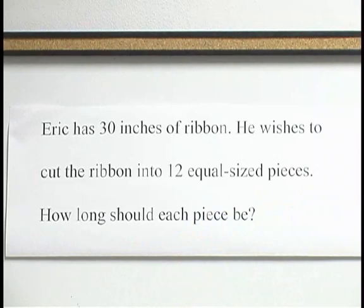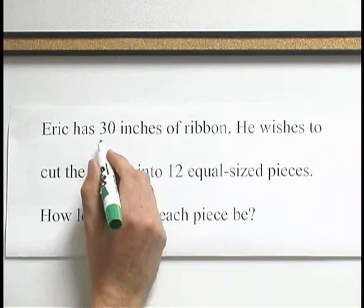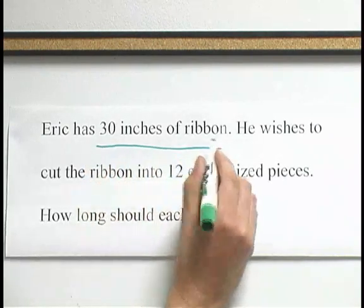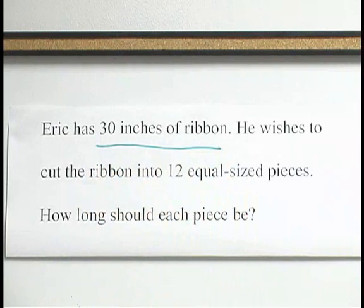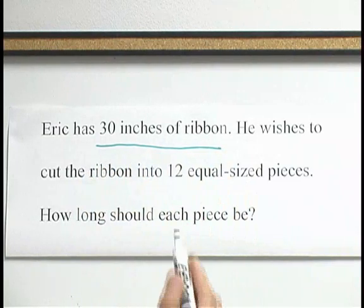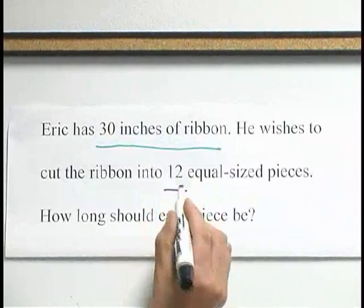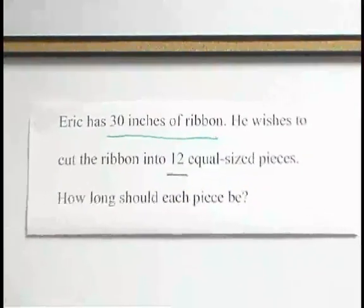There are two important numbers in this problem. One is the 30 that represents the 30 inches of ribbon that Eric has, and the other is the 12 that represents how many pieces he's cutting the ribbon into.